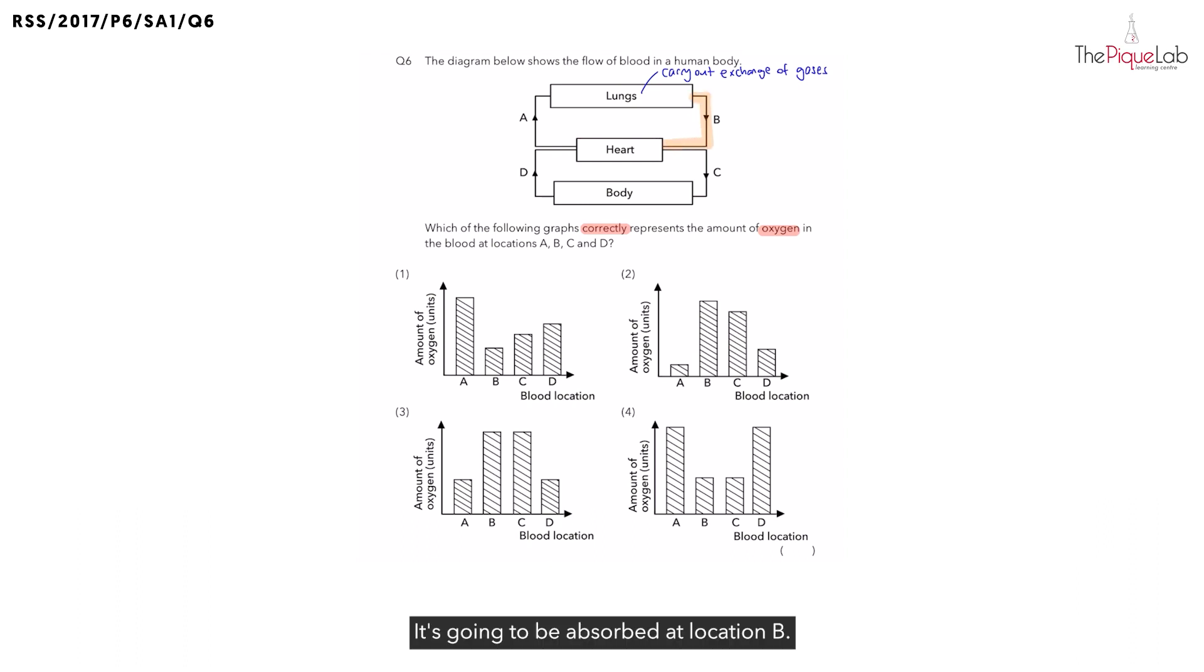And we can see oxygen is going to be absorbed into the blood at which location? It's going to be absorbed at location B. And since oxygen gets absorbed into the bloodstream at location B, this means B how much oxygen would it have? Would it have the most or the least amount of oxygen? We know that B has the most amount of oxygen.